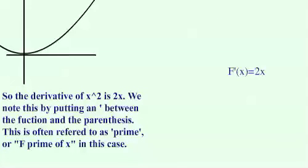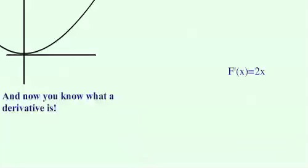We denote this by putting an apostrophe between the function name and the parenthesis, often referred to as prime, or f prime of x. If you were taking a second derivative you'd put two apostrophes, and for any number greater than that you put the integer. And now you know the basics of the derivative.